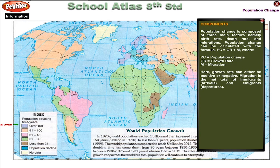Population change is composed of three main factors: birth rate, death rate, and migration. It is calculated with the formula: PC equals GR plus M, where PC is population change, GR is growth rate, and M is migration. Growth rate can be either positive or negative, and migration is the net total of immigrant arrivals and emigrant departures.